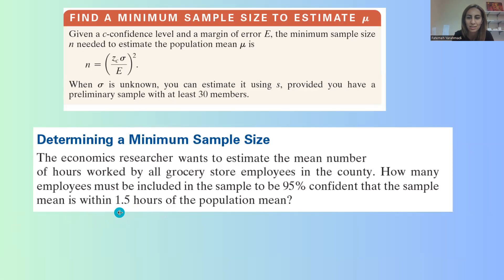So when it says the sample mean is within 1.5 hours of population mean, this 1.5 hours is basically your margin of error, the distance that you need.